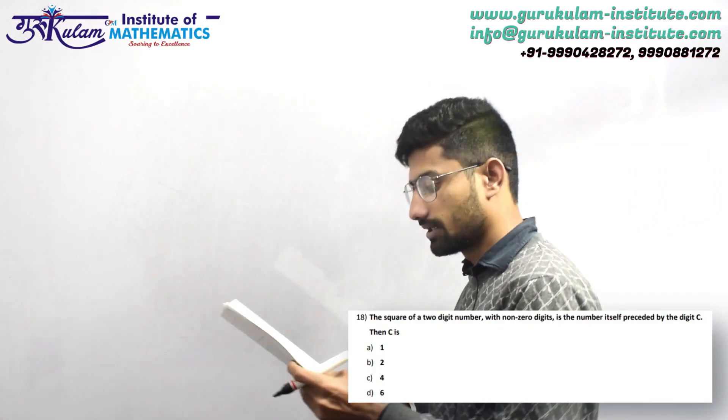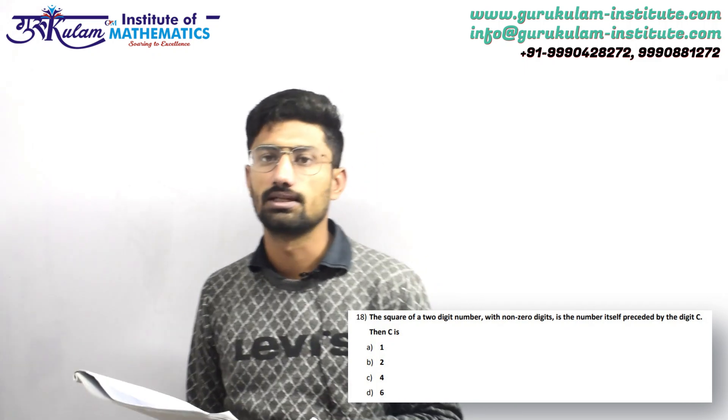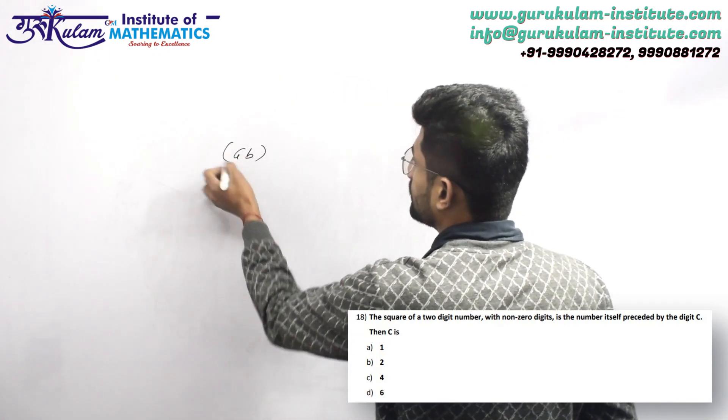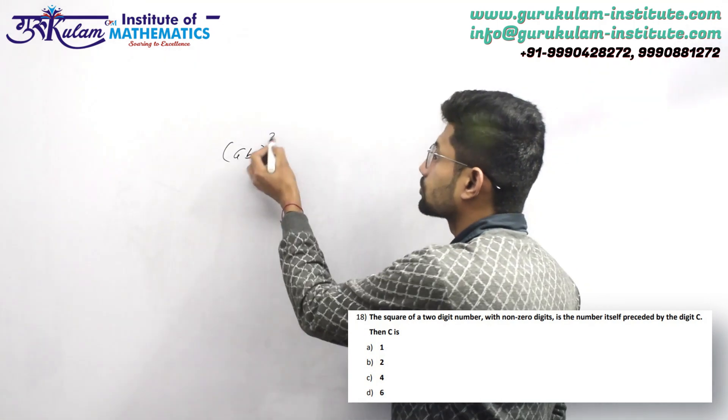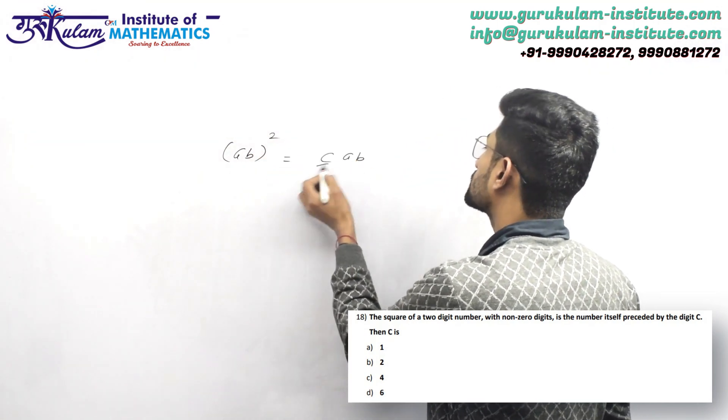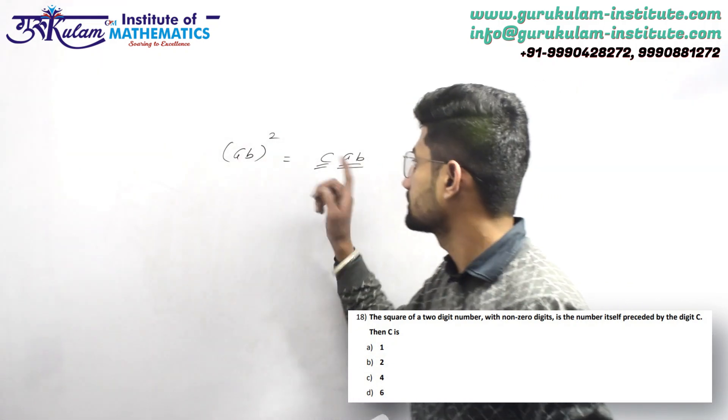The square of a two-digit number with non-zero digits is the number itself preceded by the digit C. This is a two-digit number with non-zero digits. Its square is a three-digit number, where C precedes the number itself. What is the value?